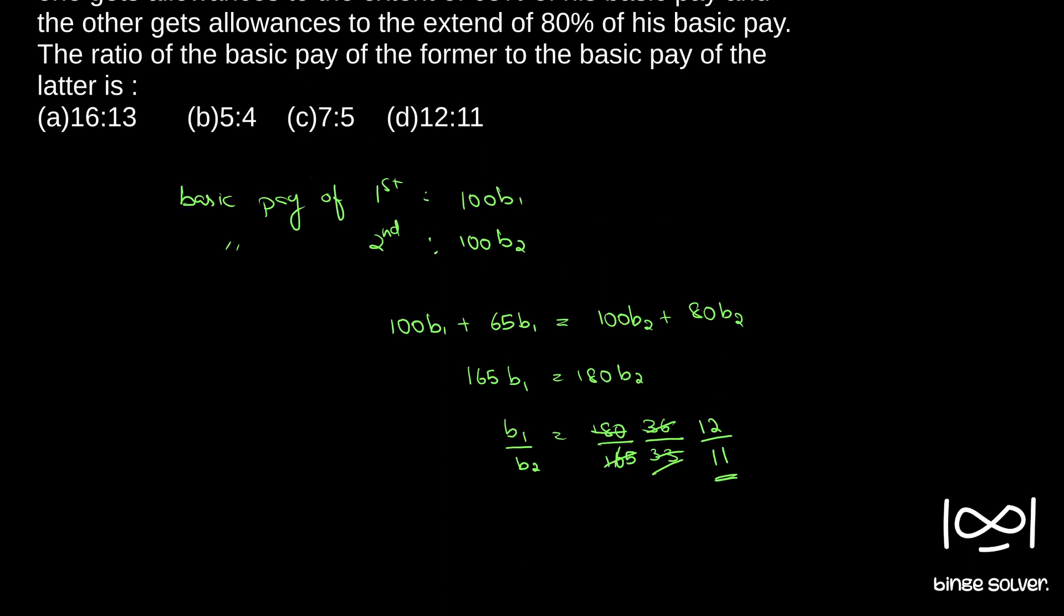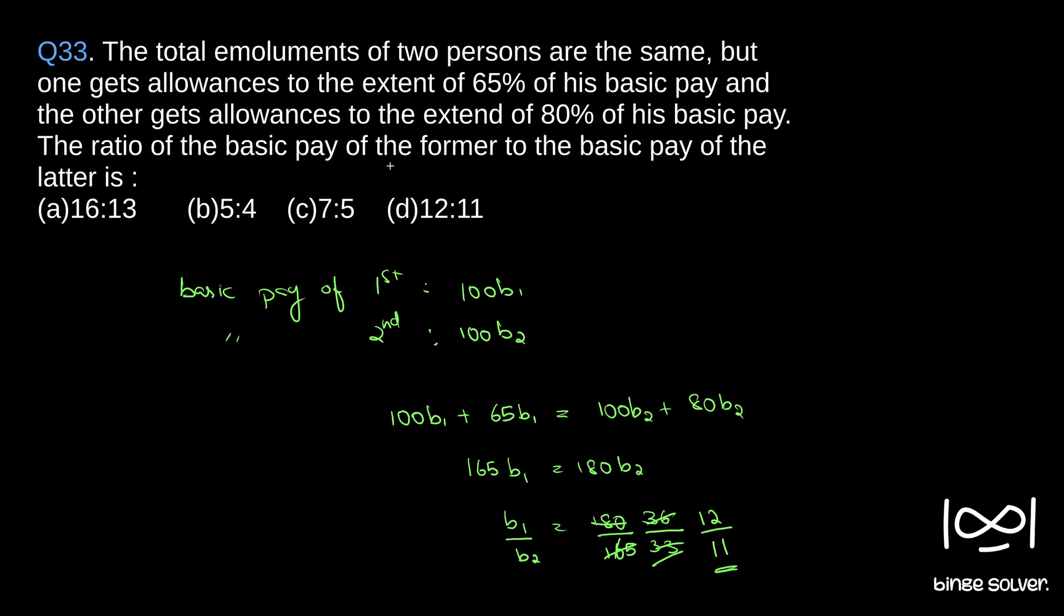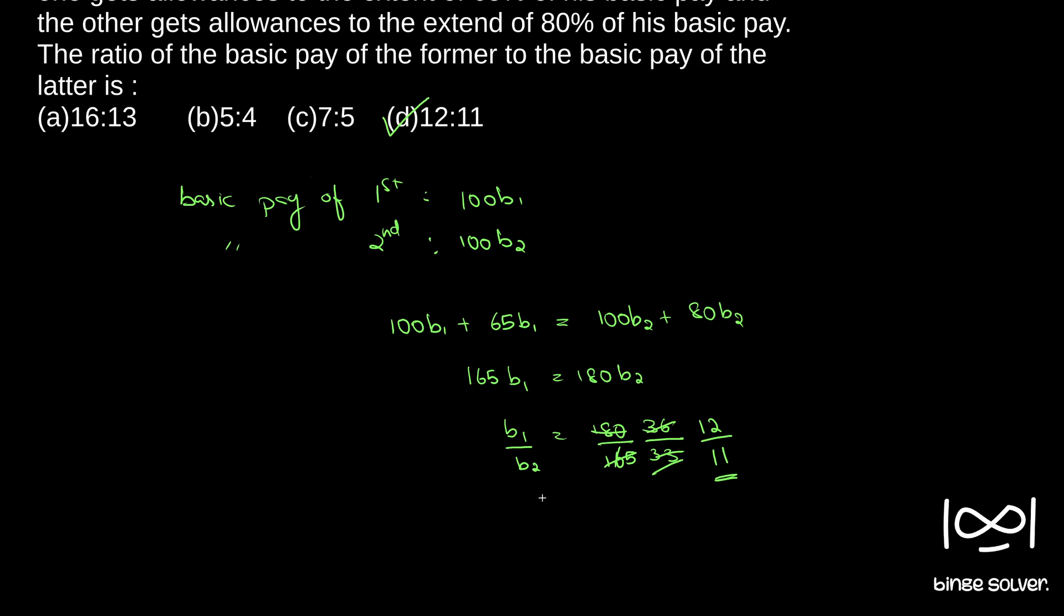So ratio of their basic pay is 12 by 11. There is option D, 12 by 11. So solution to question 33 is 12 by 11.